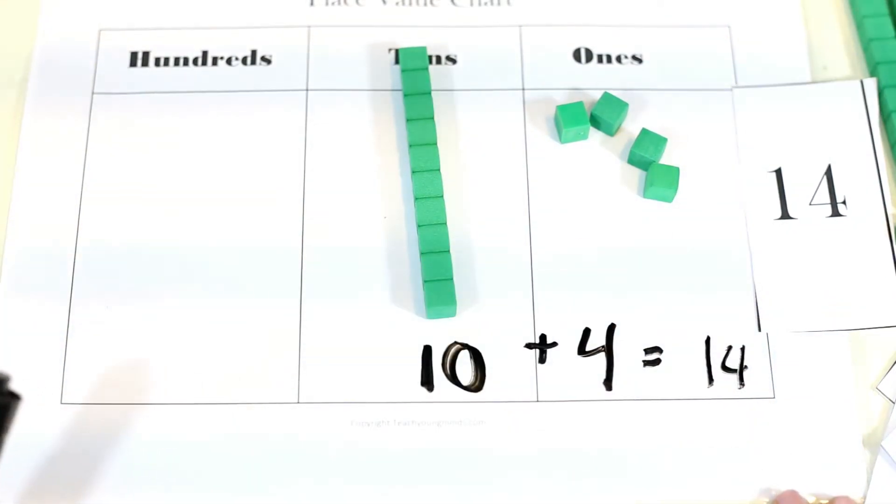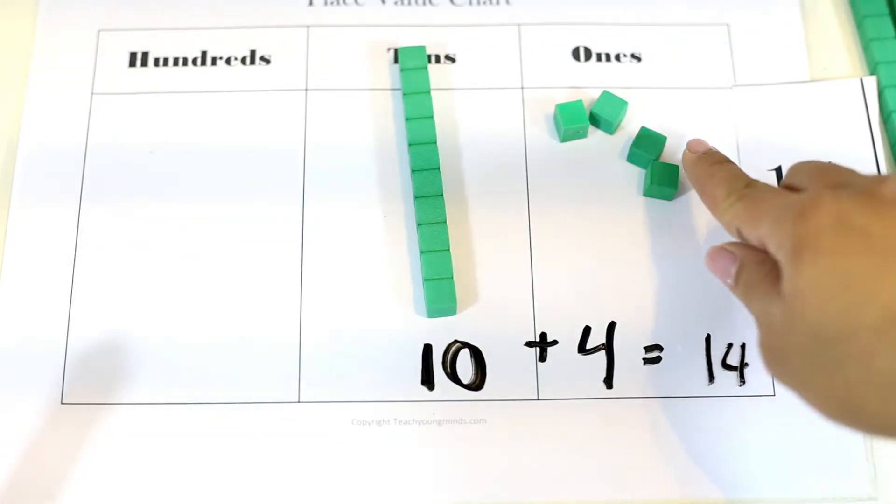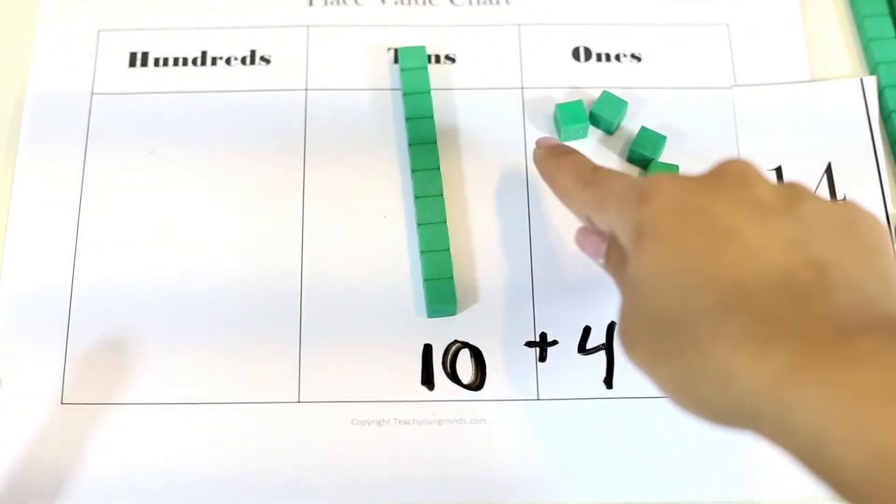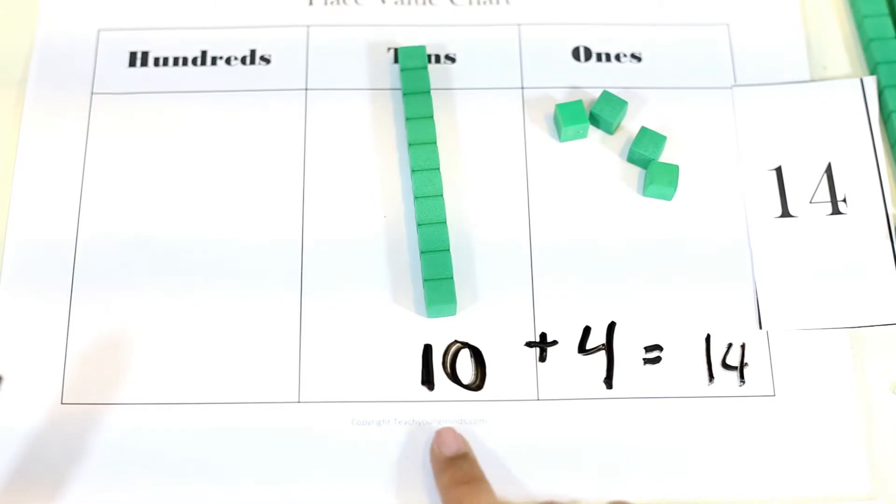The learner just learned three different ways to show a number. 14 this way, 14 using a diagram or picture, and then 14 using the expanded form.